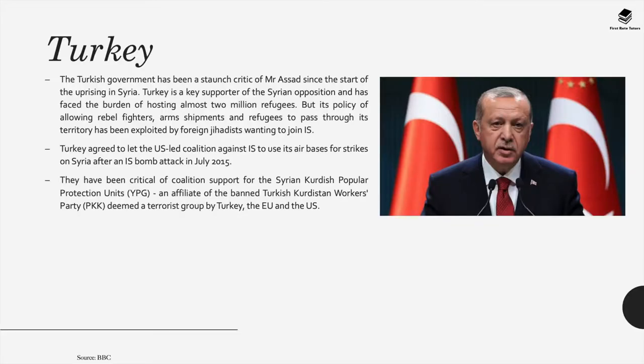The first country against the Assad regime is Turkey. The Turkish government has been a staunch critic of Assad since the start of the uprising in Syria. Turkey is a key supporter of the Syrian opposition and has faced the burden of hosting almost 2 million refugees from Syria. But its policy of allowing rebel fighters, arms shipments and refugees to pass through its territory has been exploited by foreign jihadists wanting to join IS. Turkey allowed the US-led coalition against IS to use its air bases for strikes on Syria after an IS bomb attack in July 2015.